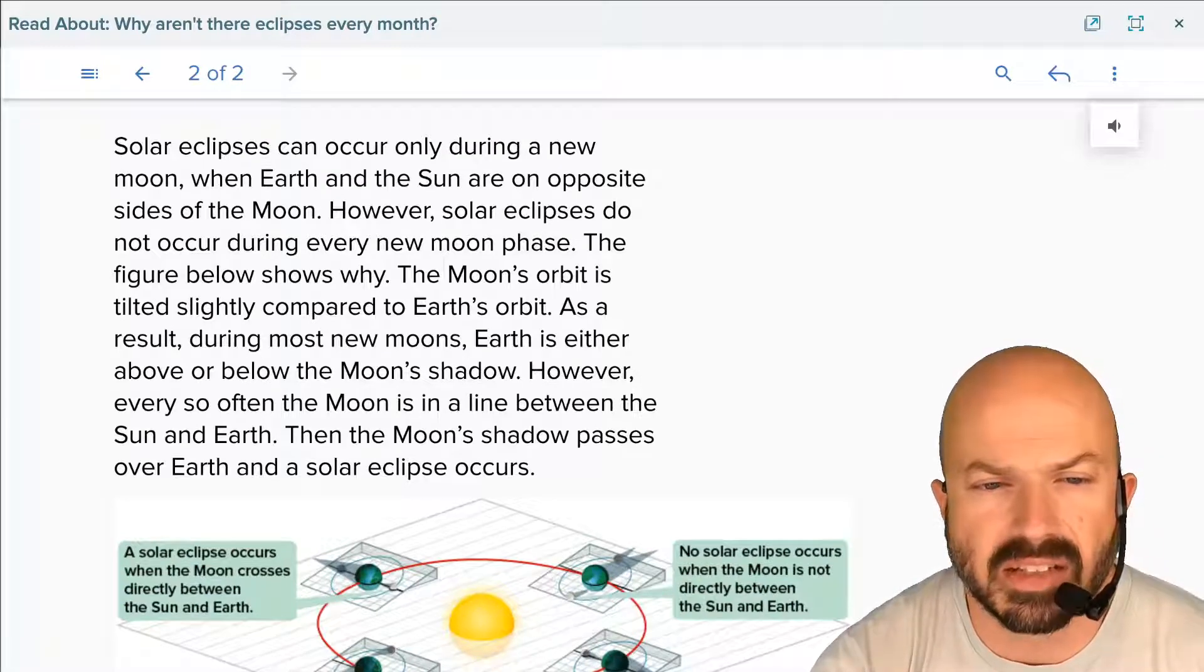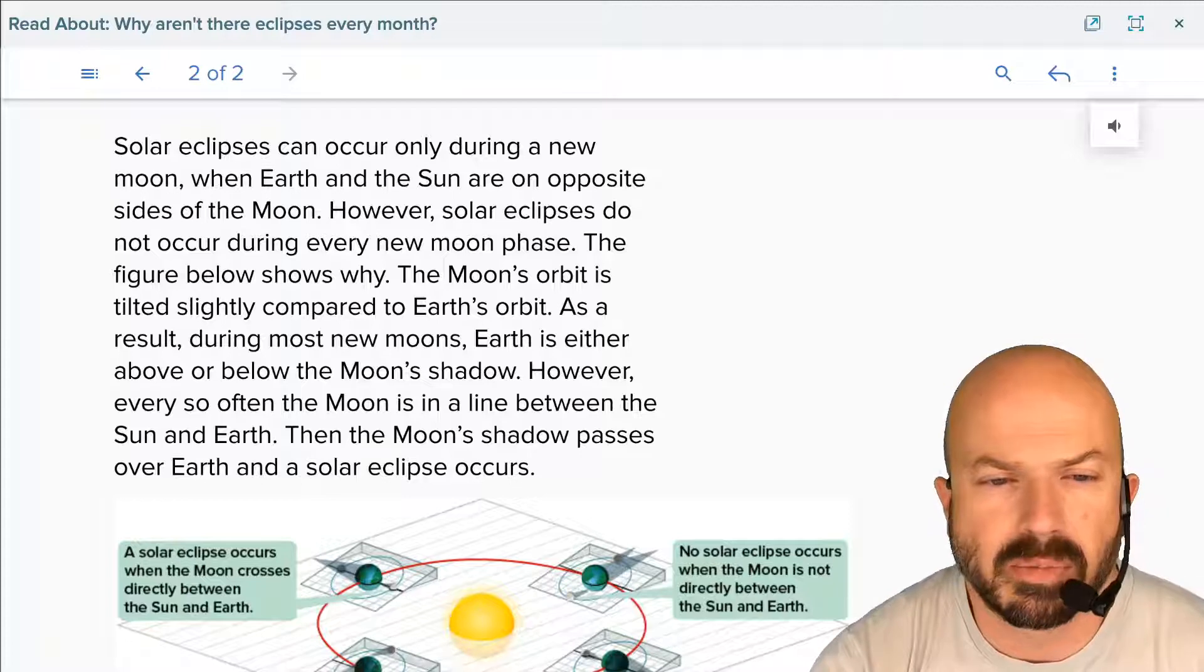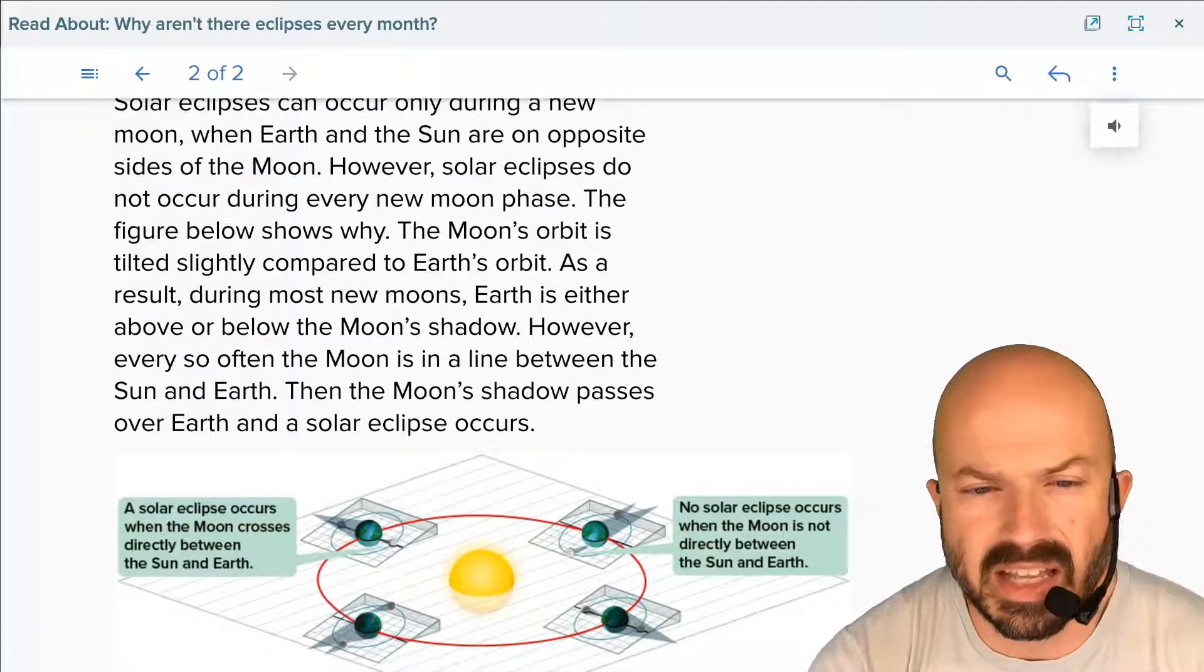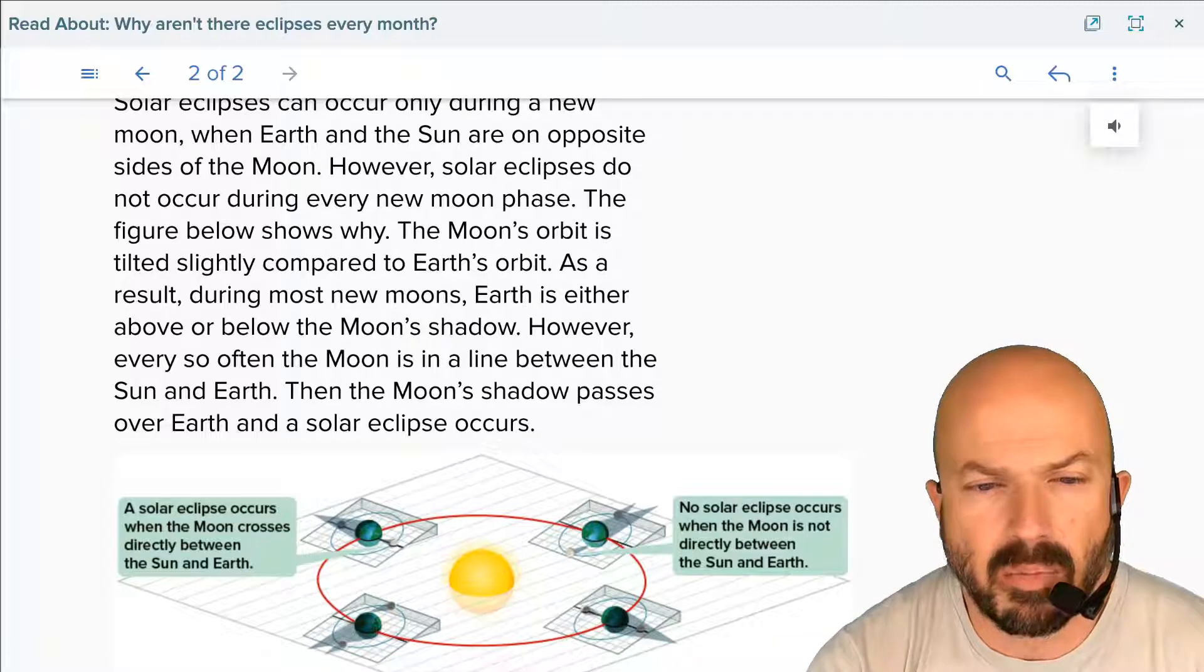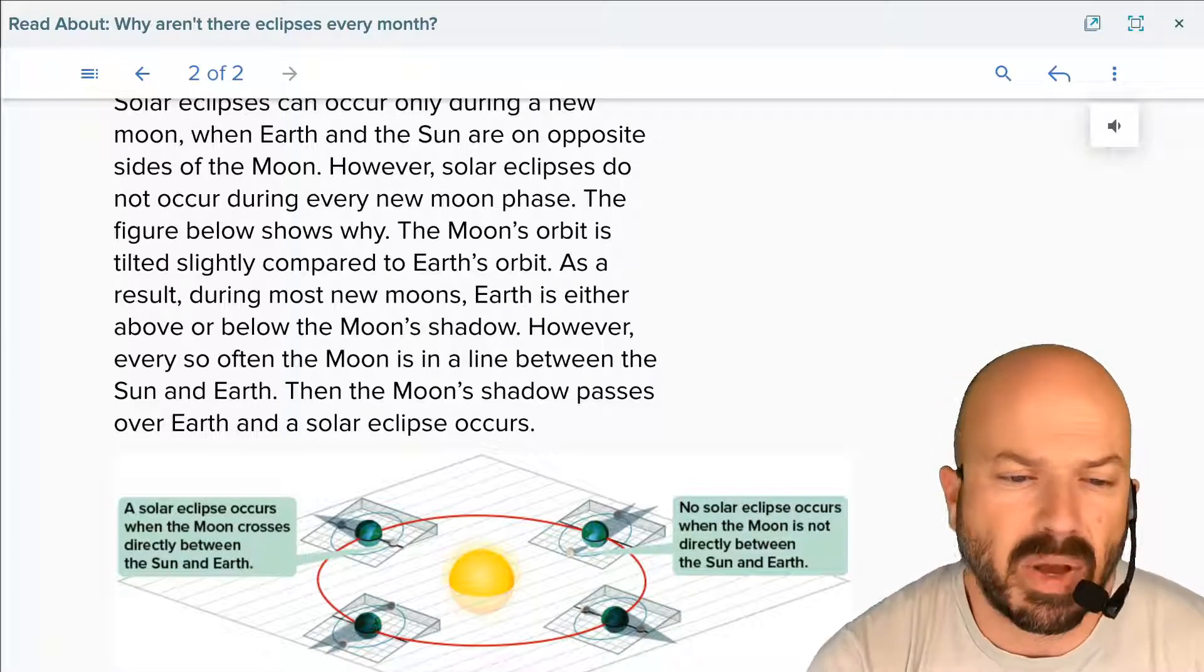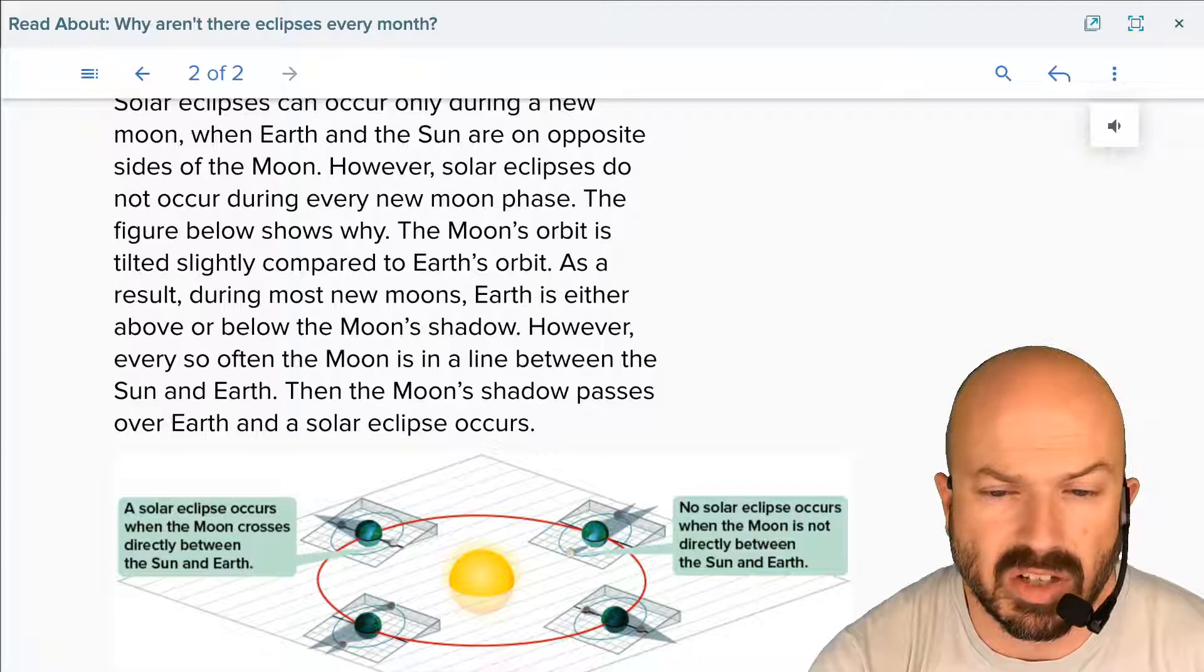Solar eclipses can only occur during a new moon, when earth and sun are on opposite sides of the moon. However, solar eclipses do not occur during every new moon phase. This figure below shows why: the moon's orbit is tilted slightly compared to earth's orbit. As a result, during most new moons, earth is either above or below the moon's shadow. However, every so often the moon is in a line between the sun and earth. Then the moon's shadow passes over earth and a solar eclipse occurs.